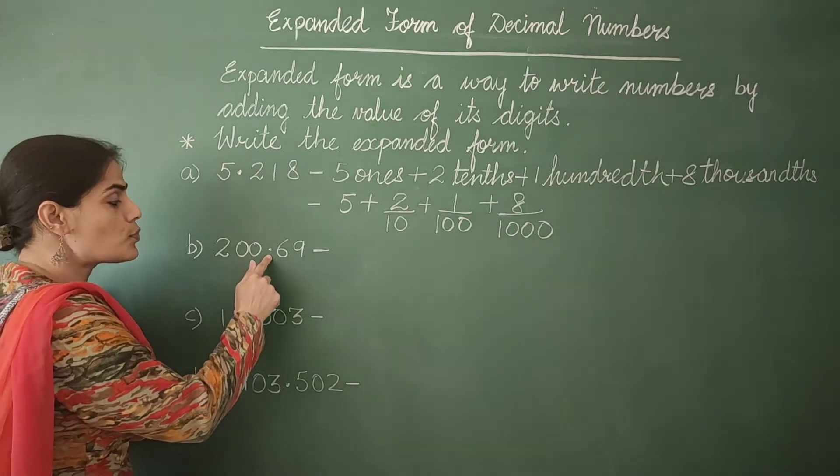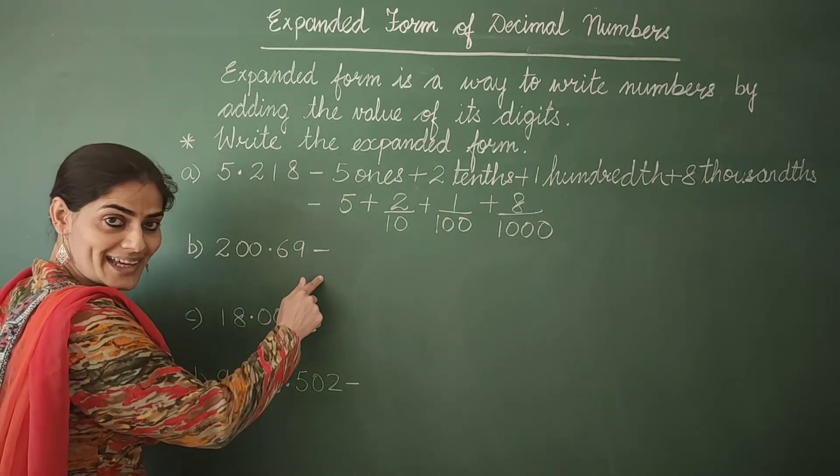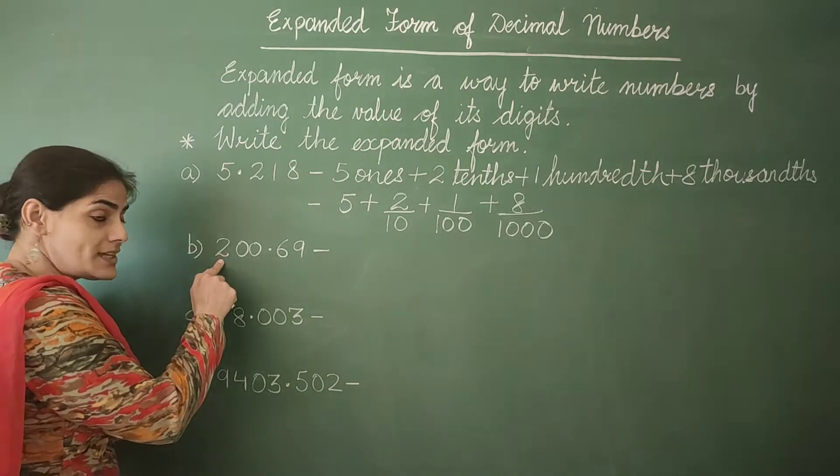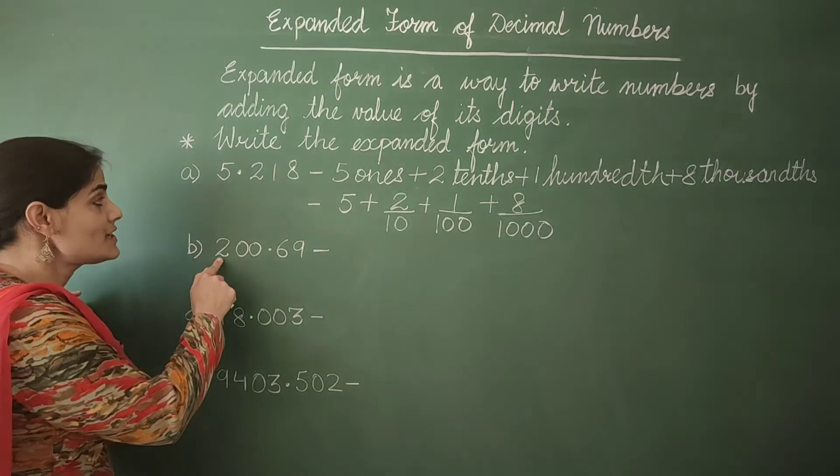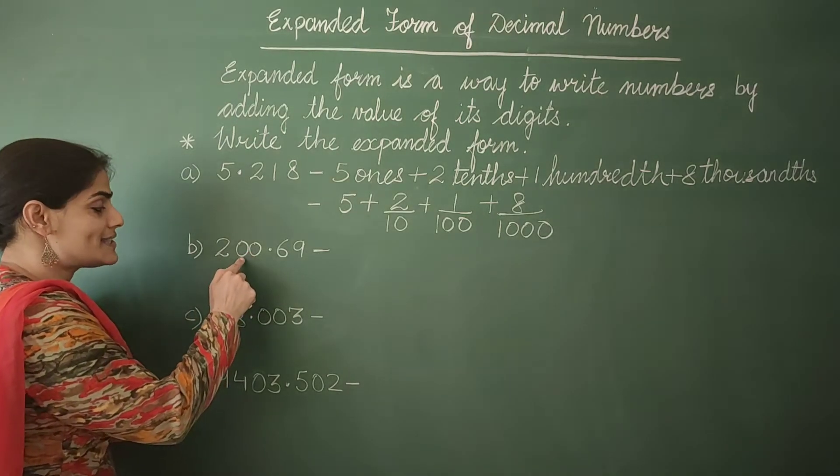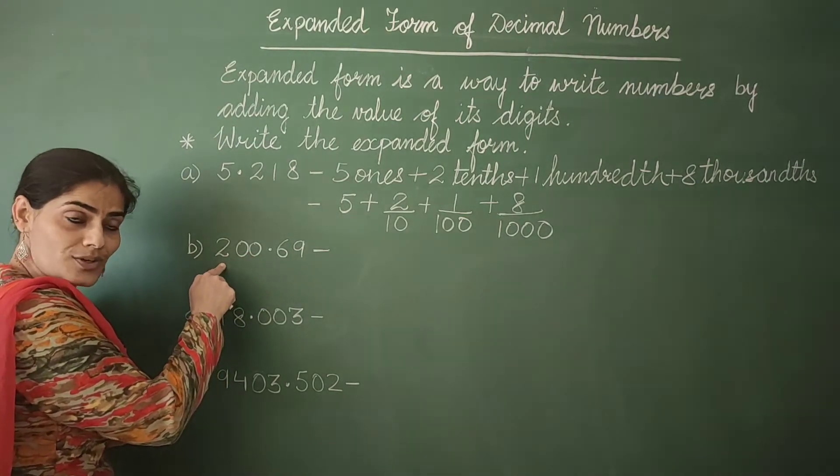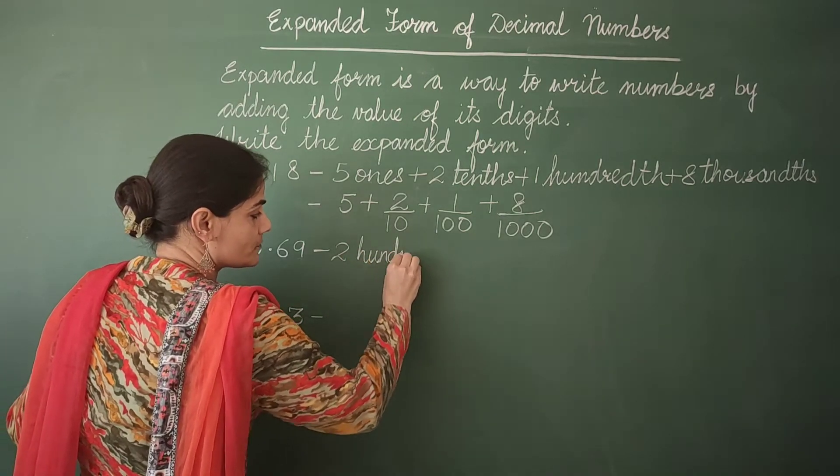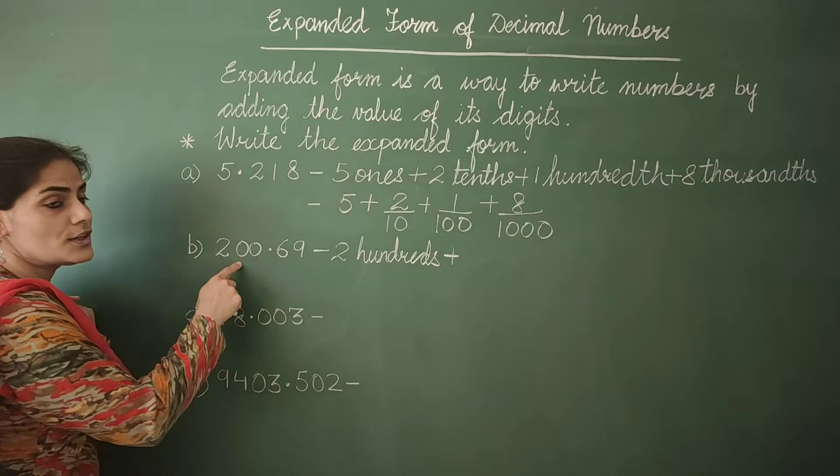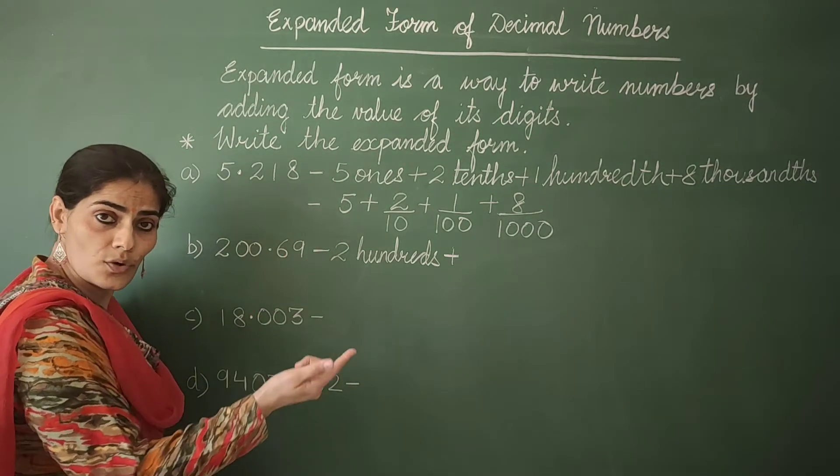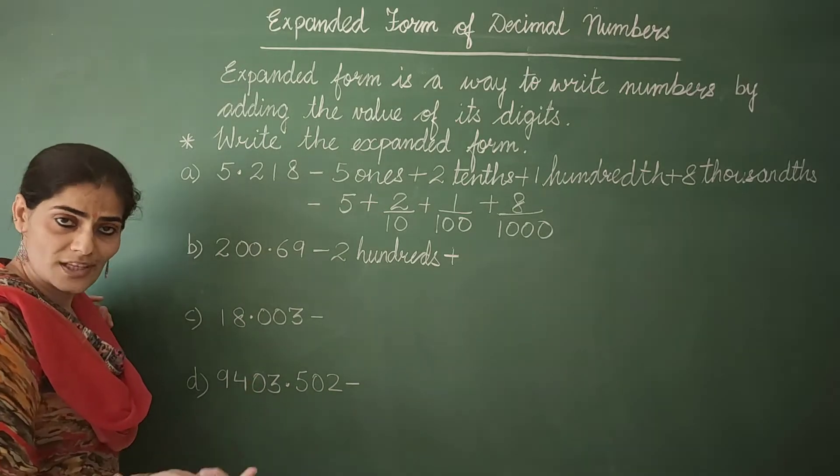This is 200.69. Now this is whole number part. So the digit on the extreme left is 2. 2 is at what place? Ones, tens and hundreds. So 2 hundreds plus 0 tens then again plus 0 ones which will be equal to 0.